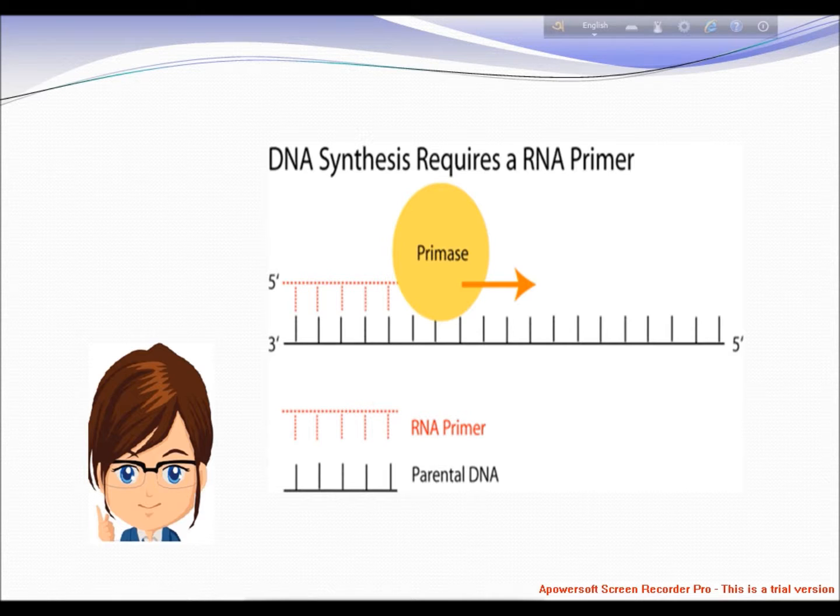Primase is one of the most error-prone and slow polymerases. Primase in organisms such as E. coli synthesizes around 2,000 to 3,000 primers at the rate of one primer per second.